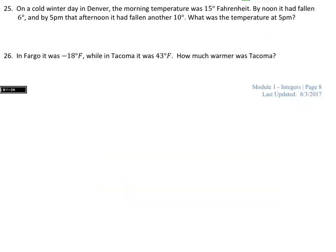On a cold winter day in Denver, the morning temperature was 15 degrees Fahrenheit. By noon it had fallen 6 degrees. It didn't say it fell to 6 degrees, it just had fallen 6 degrees. And by 5 p.m. that afternoon, it had fallen another 10 degrees. What was the temperature at 5 o'clock p.m.? So we are starting at 15 degrees positive temperature, but then it falls, so we're going to subtract 6 degrees out of that, and then from there it's going to fall another 10 degrees.